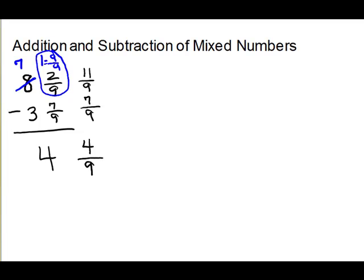If you had trouble with the borrowing step, an alternate way to think about it: you had 1 and 2 ninths — just convert that directly to an improper fraction. 1 times 9 is 9, then 10, 11 — giving 11 over 9. That's an alternate way rather than changing the 1 to 9 ninths. Use whichever way clicks better for you.